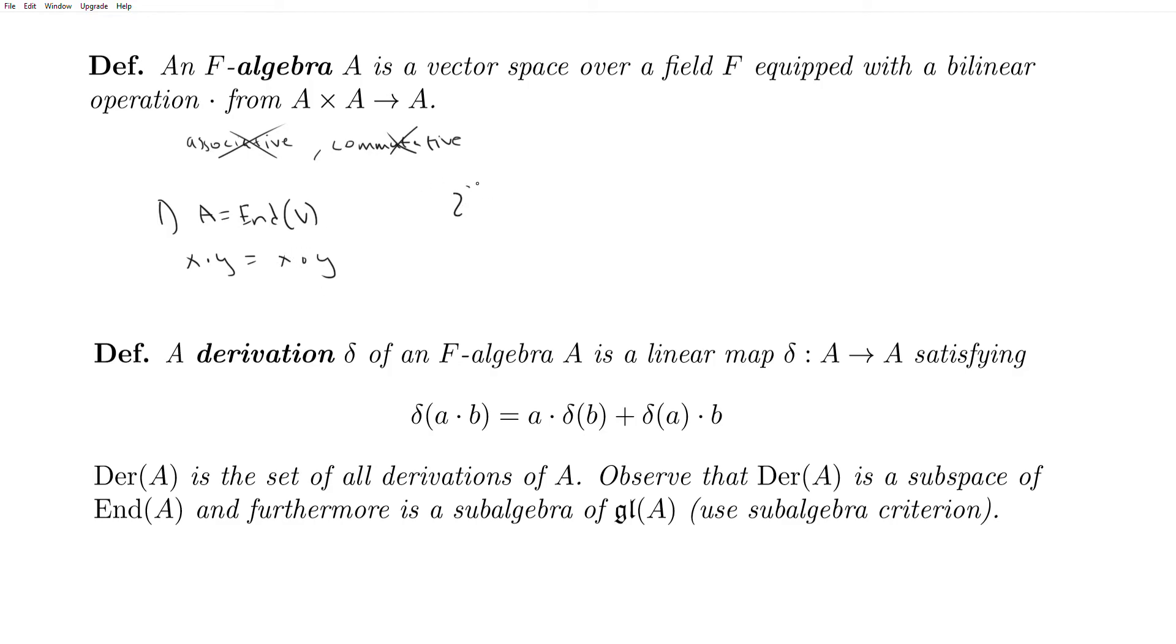Another example is if A is a Lie algebra. So any Lie algebra has the bracket operation. And so if we just define the dot to be the bracket of those two things, certainly the bracket is bilinear. And so that works.